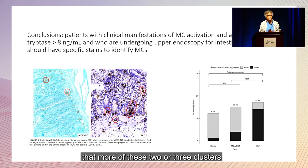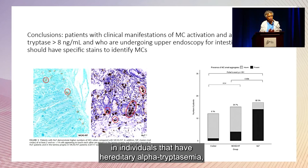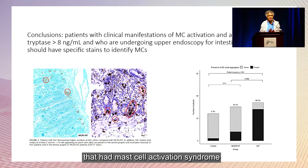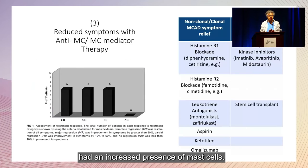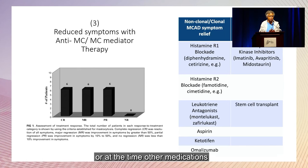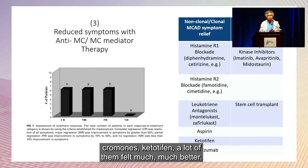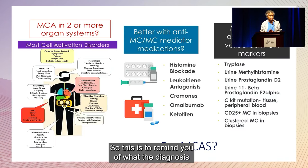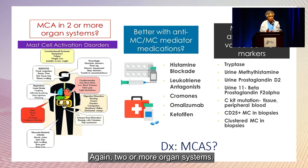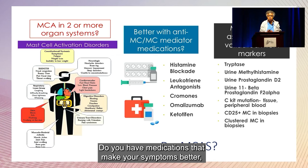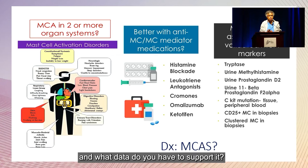Individuals with mast activation syndrome without hereditary alpha-tryptasemia also showed an increased presence of mast cells. Once switched off of medications like Linzess — classically used for IBS — and moved over to histamine blockade, chromones, and ketotifen, many felt much better. This brings us back to the diagnosis of mast cell activation syndrome: two or more organ systems, medications that make your symptoms better such as histamine blockade, and supporting data.